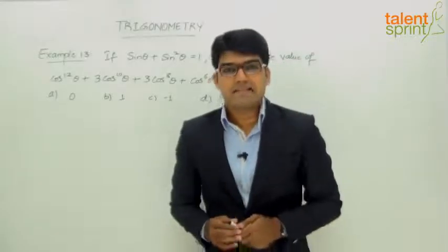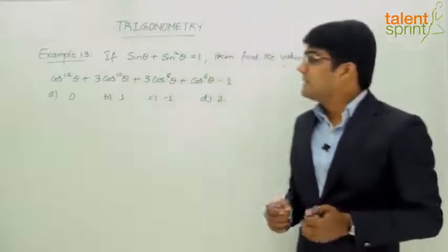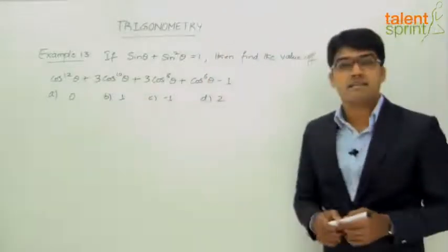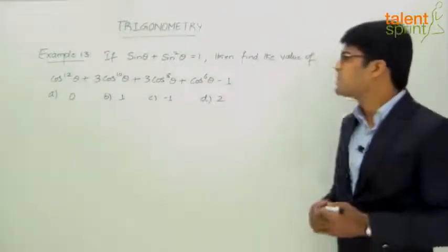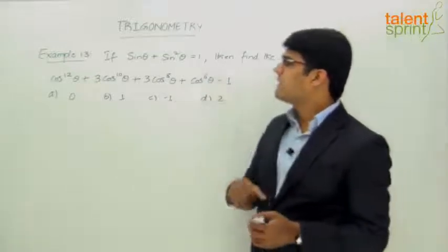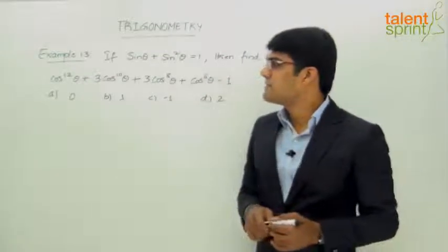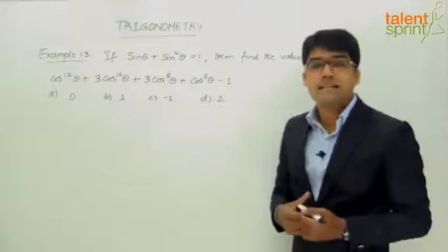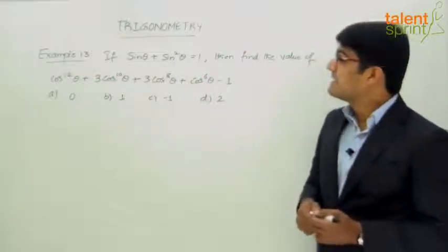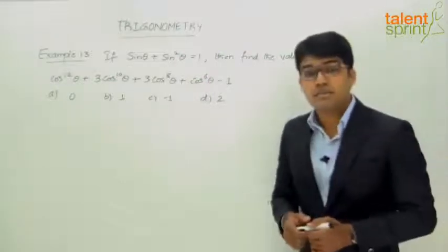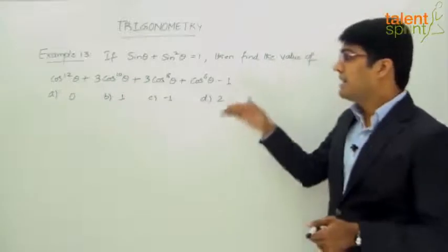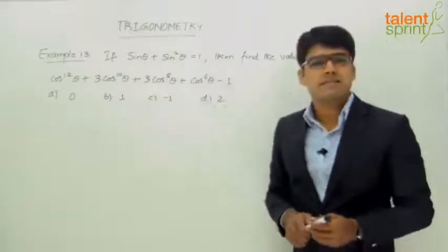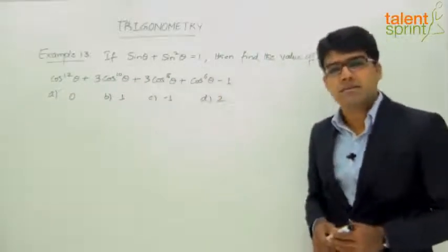Let us now look at our next example, Example 13. The question says: if sin θ + sin²θ = 1, then find the value of the expression cos¹²θ + 3cos¹⁰θ + 3cos⁸θ + cos⁶θ - 1. What is given is sin θ + sin²θ = 1.